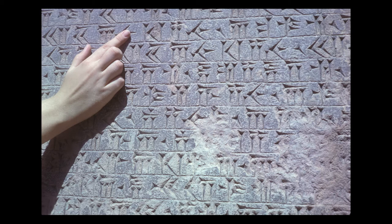Section 2: "King Darius says: My father is Hystaspes; the father of Hystaspes was Arsames; the father of Arsames was Ariaramnes; the father of Ariaramnes was Teispes; the father of Teispes was Achaemenes." Section 3: "King Darius says: That is why we are called Achaemenids. From antiquity we have been noble; from antiquity has our dynasty been royal."